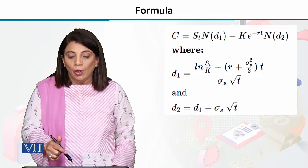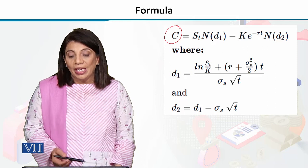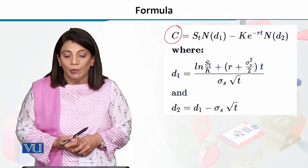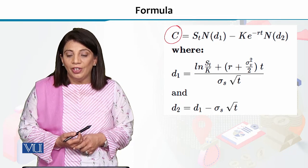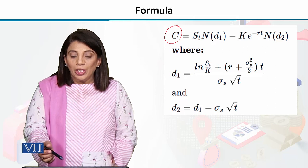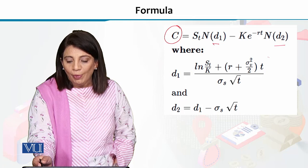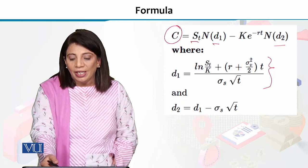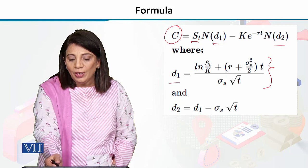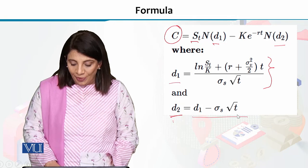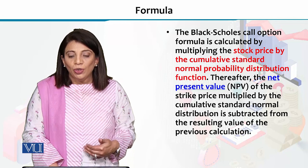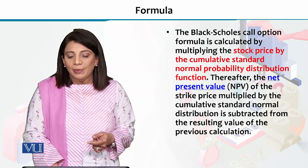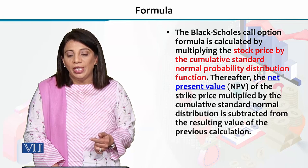If we look at the formula, the call price, given by capital C, will be calculated by using this formula: C = S·N(d1) − K·e^(−rt)·N(d2). Here, S is the spot price. We multiply the stock price by the cumulative standard normal probability distribution function N(d1). The call option price is determined for spot price multiplied by the cumulative standard normal probability distribution.